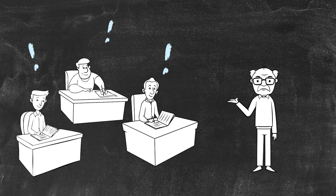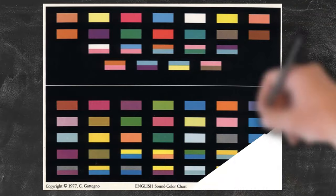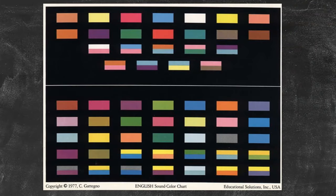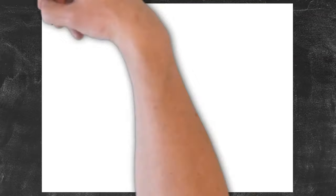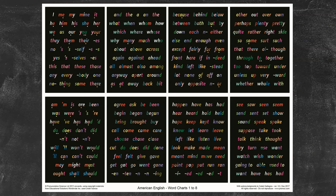There's an example of Cuisenaire rods here. What teachers of English realized was that if this constructivist idea of using visual representation worked for concepts in mathematics, why could it not be applied to the teaching of English? This is what the Silent Way and Gattegno came up with. The idea is that each of these colors would represent a different sound — a phoneme — and by using those colors he could teach vocabulary and indeed grammar.